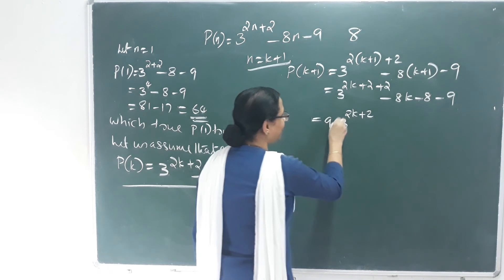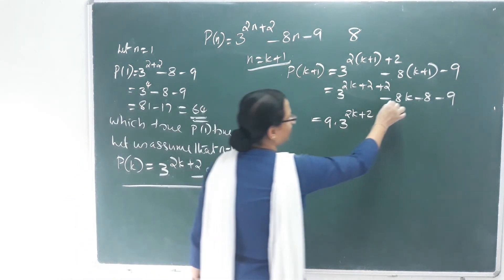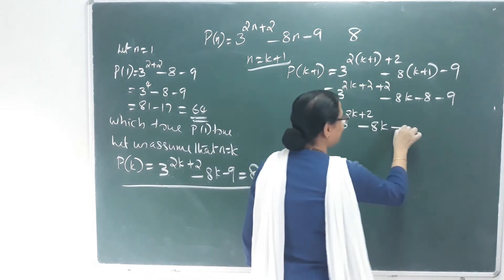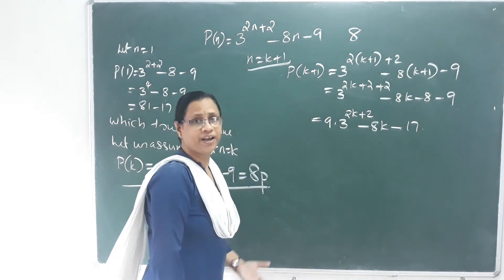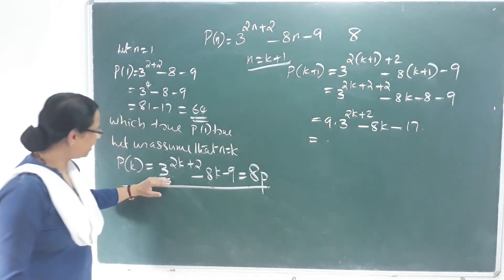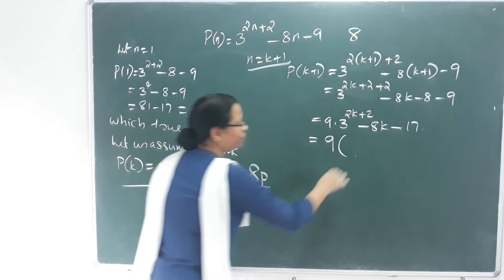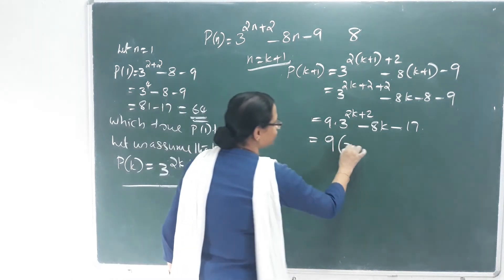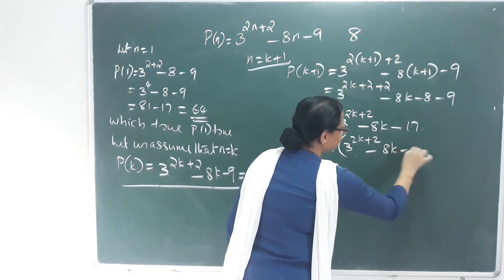We substitute 8p for 3 raised to 2k plus 2 minus 8k minus 9. Taking 9 outside and distributing: 9 into 8p gives 72p, and we handle the constant. We have 9 into 8 equals 72. Then minus 64k plus 64k with 9 outside.